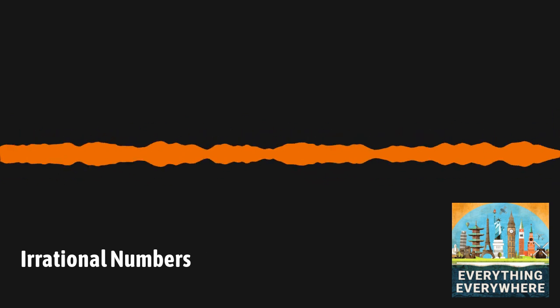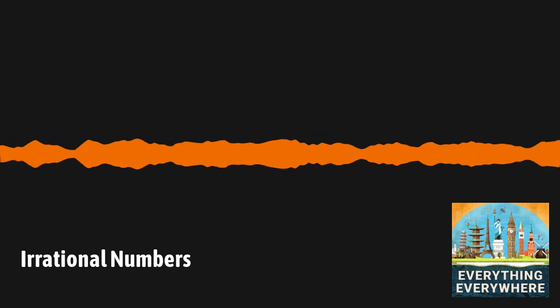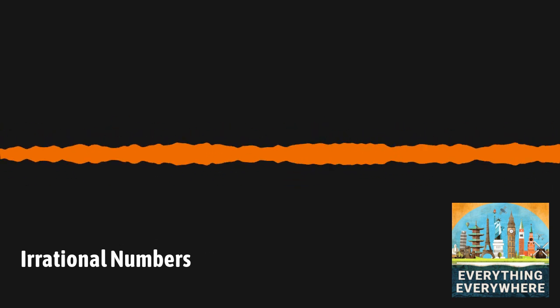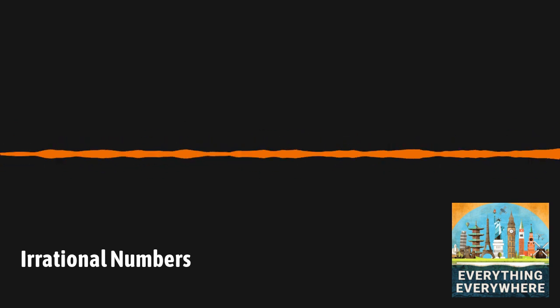Oddly enough, the easiest way to prove that the square root of two is irrational is by using the Pythagorean theorem, the very theorem named after Pythagoras, who didn't believe in irrational numbers.